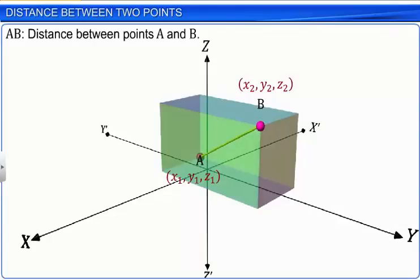We will take a point C on one vertex of the parallelepiped as shown. Since points A and C lie on the same line parallel to the Y-axis, point C will have the same X and Z coordinates as point A. Hence, the coordinates of point C are X1, Y2, Z1.